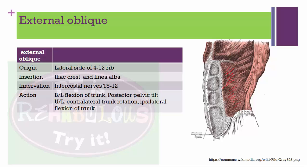If the external oblique works bilaterally: flexion of the trunk and posterior tilting of the pelvis. If working unilaterally: contralateral trunk rotation and ipsilateral trunk flexion. Remember: internal oblique rotates to the same side, external oblique rotates to the opposite side.